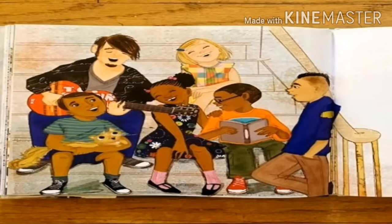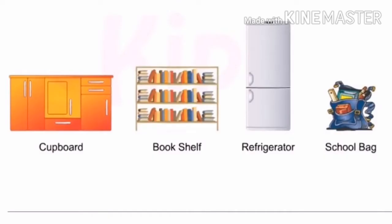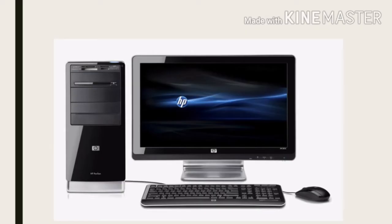So, after doing this activity, we came to know that to store some things, we use different storage units like cupboard, bookshelf, refrigerator, school bag, etc. Similarly, a computer uses different storage devices, which are also known as secondary storage devices or peripherals.